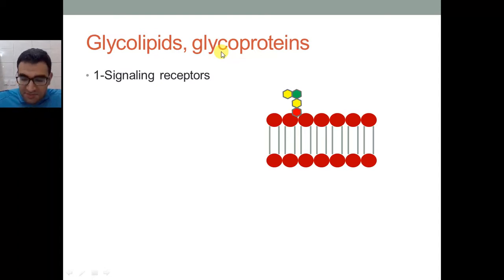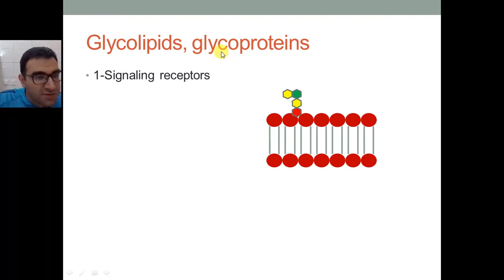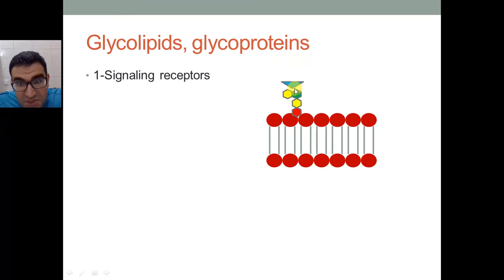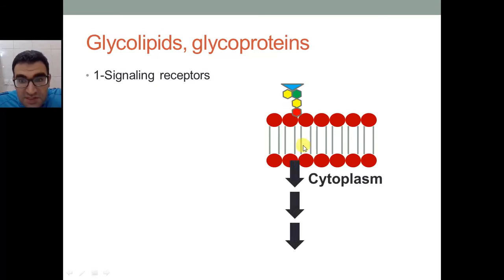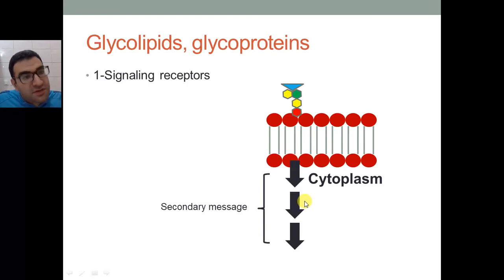Glycolipids and glycoproteins serve as signaling receptors. Cells send signals to each other either through the nervous system or through the endocrine system via hormones. A hormone is a chemical messenger delivering a message from one cell to another. The hormone binds to the glycoprotein on the cell surface, and the message is delivered into the cytoplasm as a secondary message — reaching the nucleus, the Golgi body, and so on. This message cannot be delivered without the hormone binding to the glycoprotein or glycolipid.